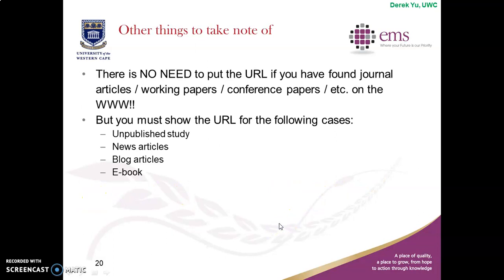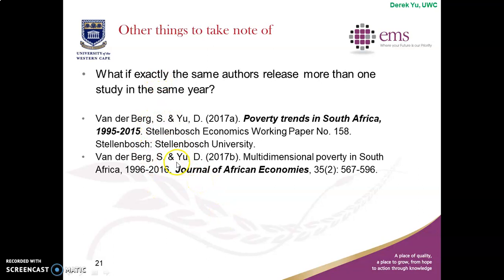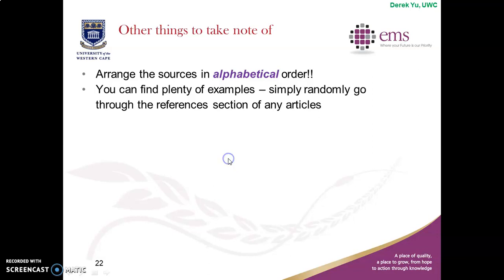What if you have exactly the same authors who published more than one study in the same year and you use both for your research essay? Then you use 'a' and 'b' to distinguish them. For example: Book and Yu, 2017a — their first study — and Book and Yu, 2017b — a second study with a co-author. In the reference list you arrange sources in alphabetical order, as you would see in any downloaded working paper's reference list.